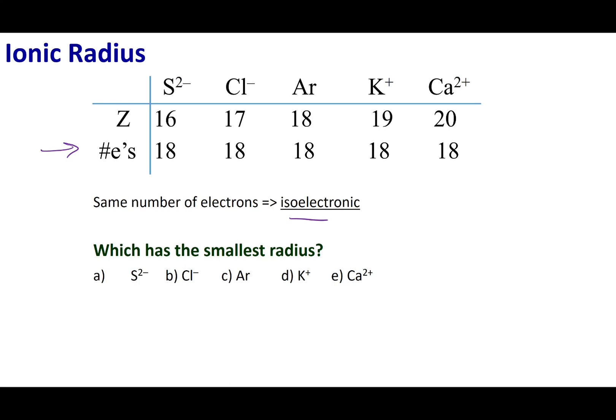I gave you a hint by listing Z here. Remember, Z is the number of protons. What you can see here is the same number of electrons are in each one of these ions. So that means that I have the same configuration of electrons on the outside.